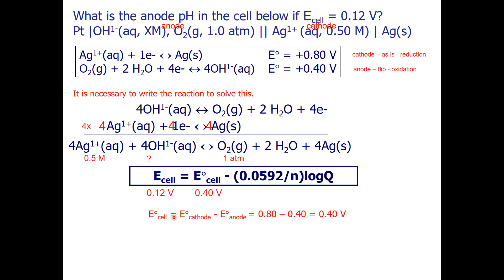E°cell is equal to the cathode reduction potential minus the anode reduction potential. So, I grab 0.8 from up here and subtract 0.4, and my standard state cell potential is 0.4 volts.